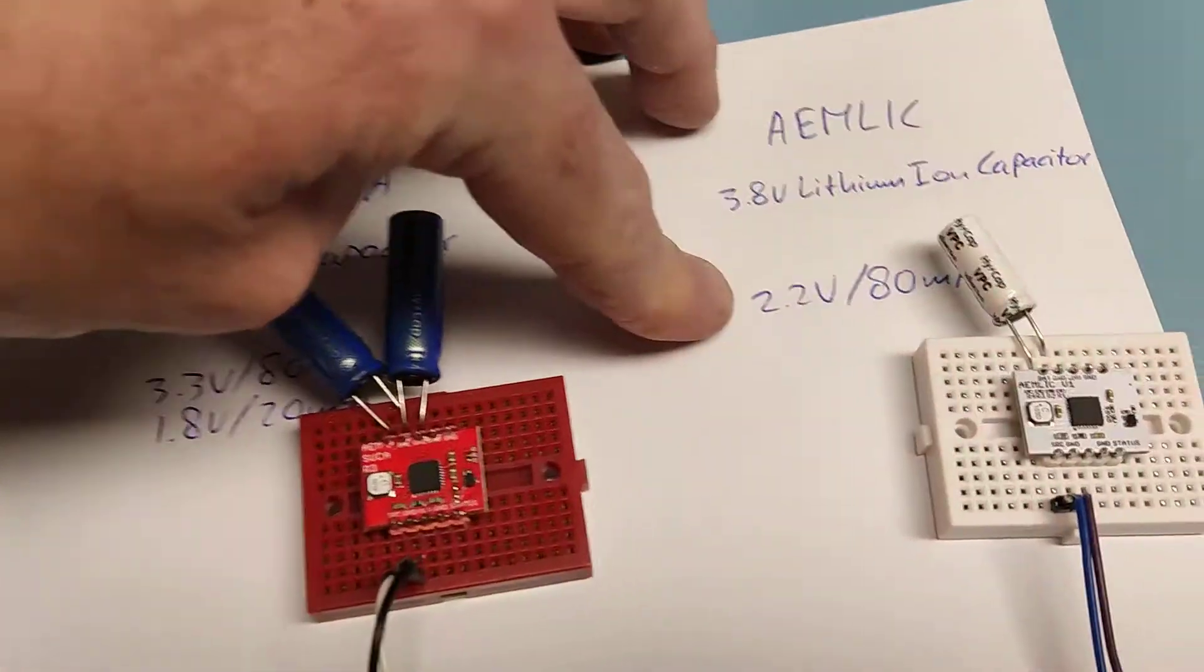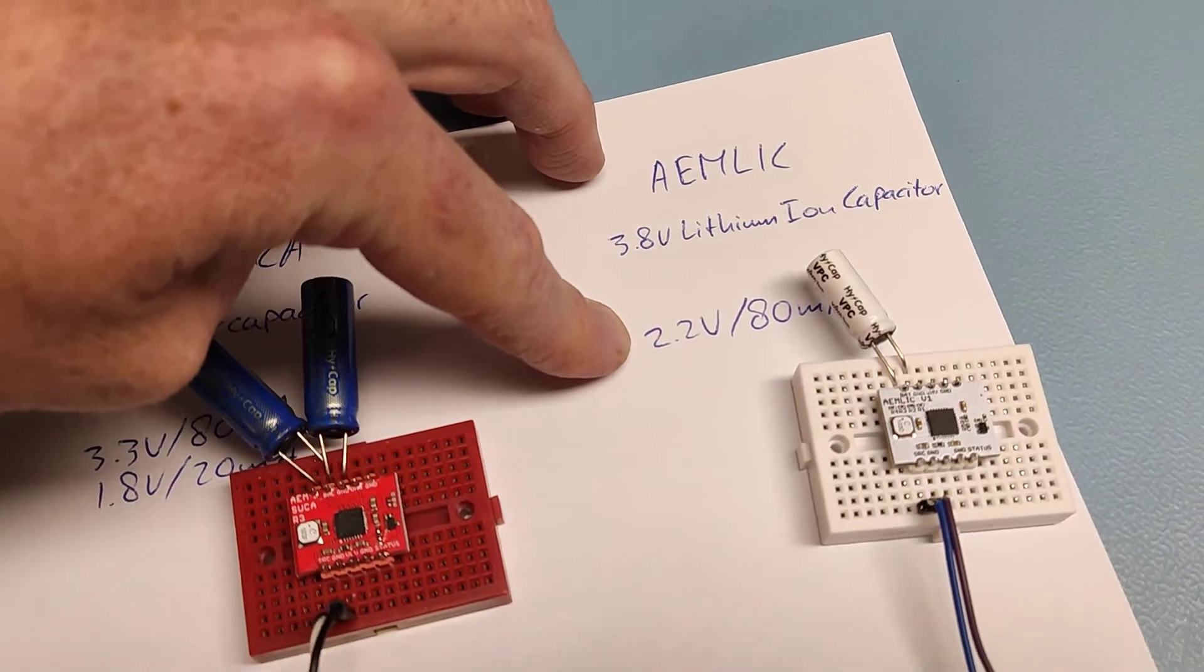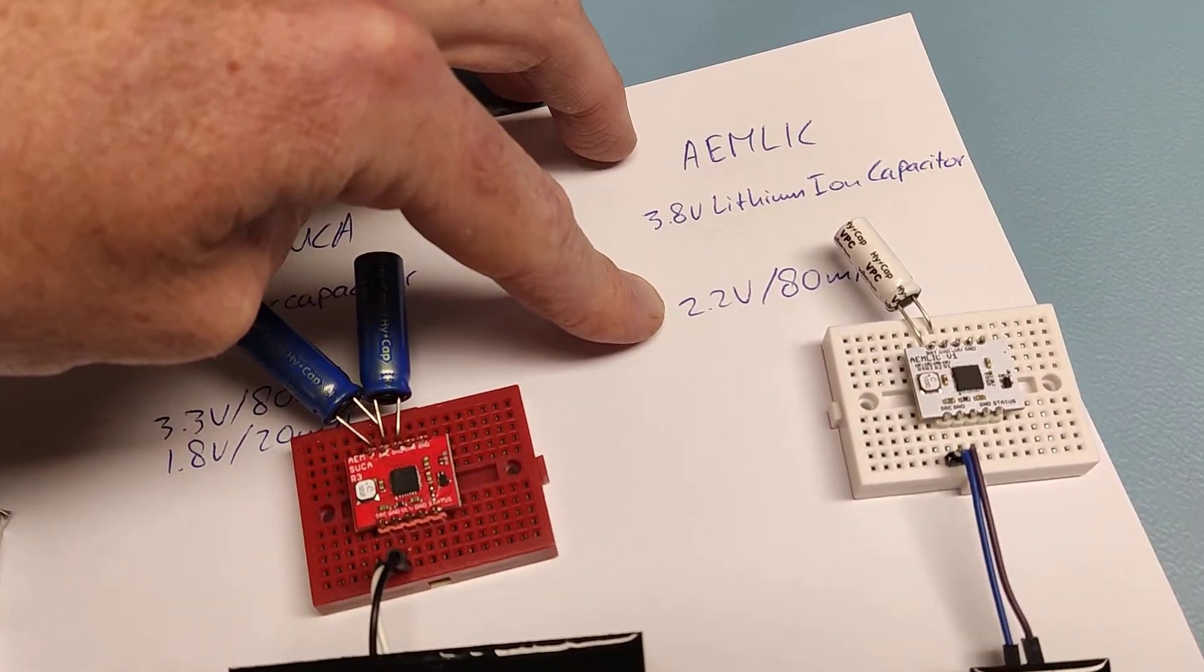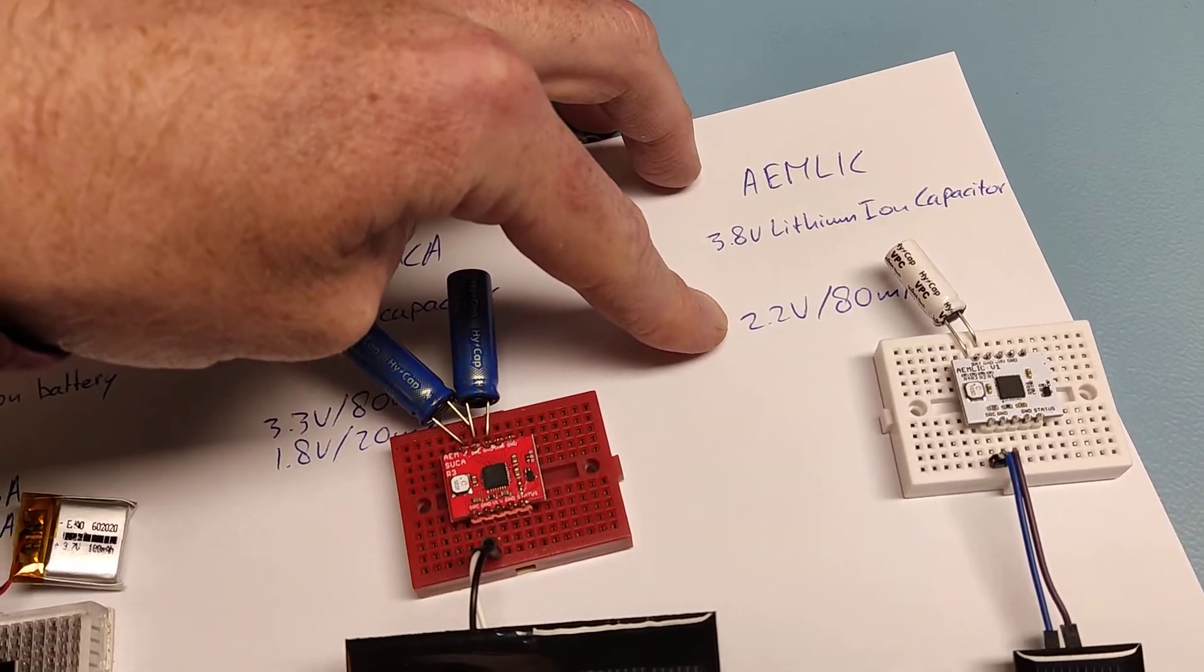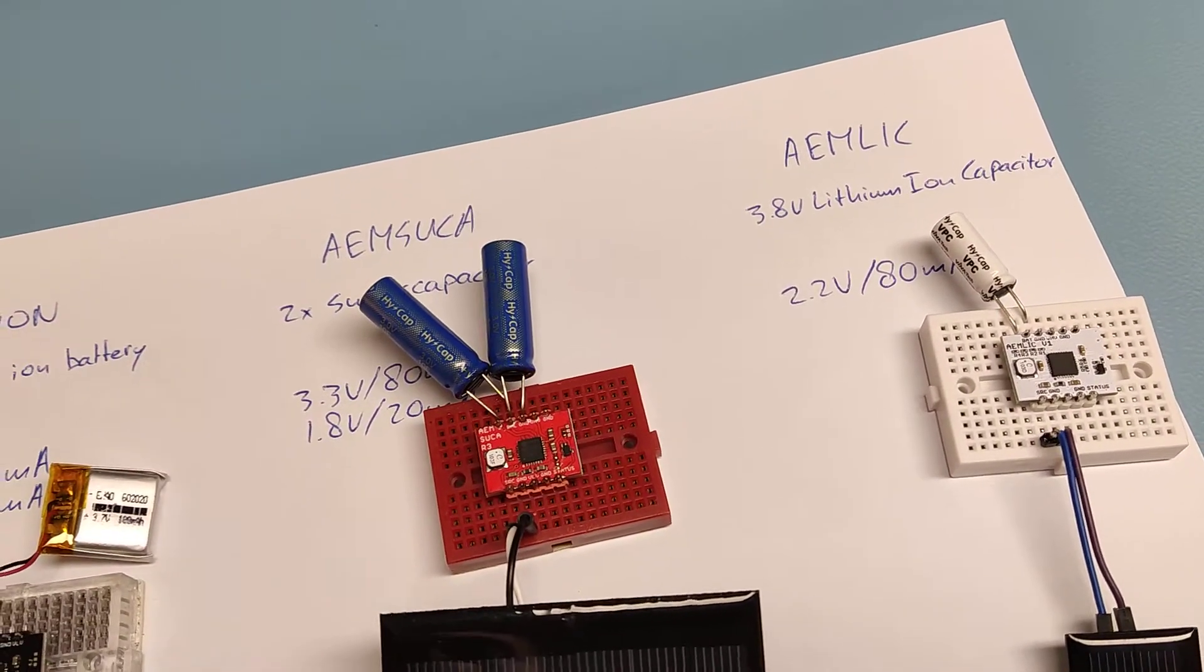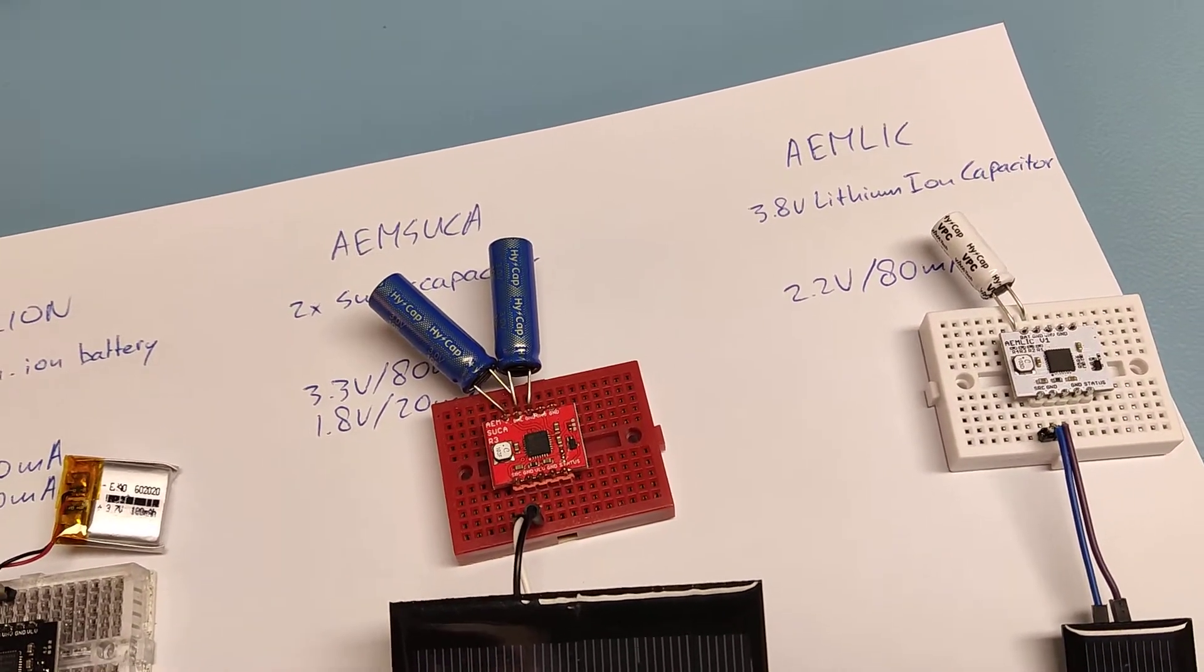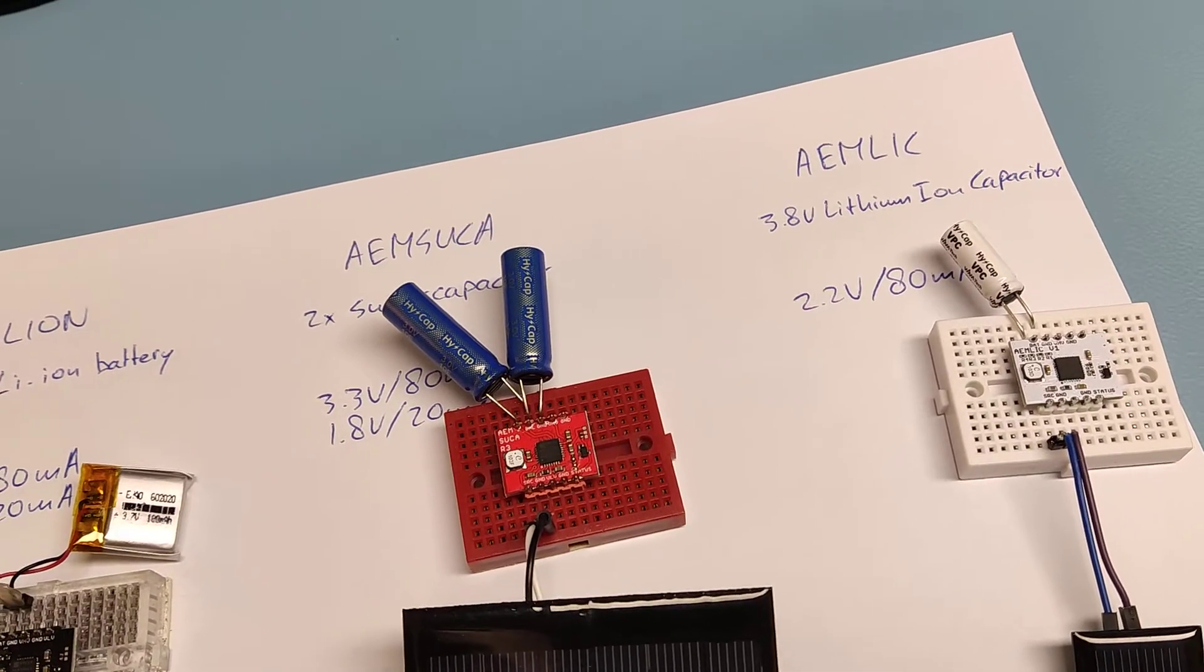And this one only has a 2.2 volt output voltage, which is great for a lot of LoRa and Bluetooth chips because they can run at 1.8 volt to 3.6 volt.